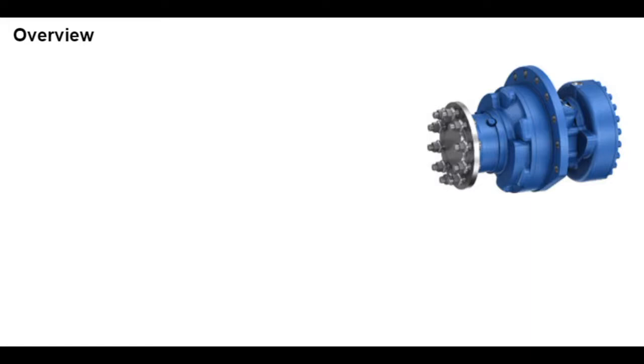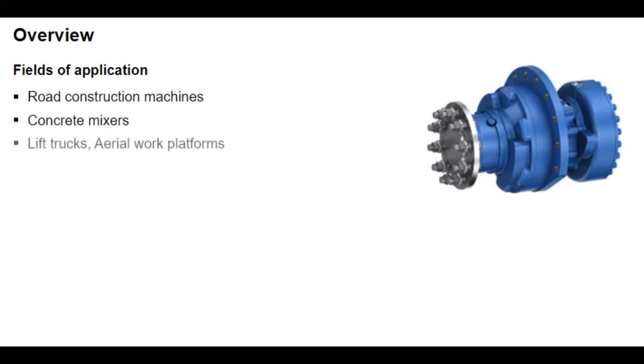These hydraulic motors can be used directly in the wheel hub as a travel drive, as seen in road construction machines, forklifts, elevating work platforms, skid steer loaders, as drum drives for concrete mixers, and in industrial hydraulics.